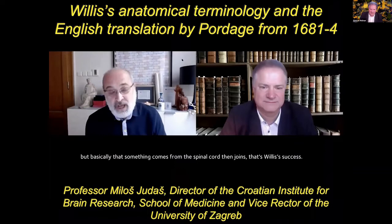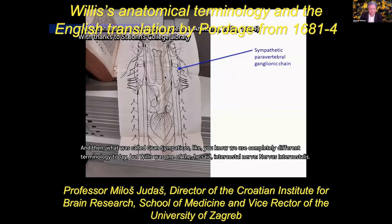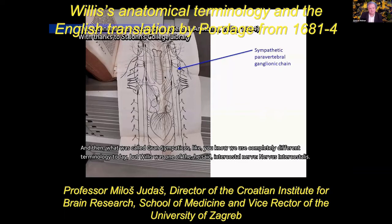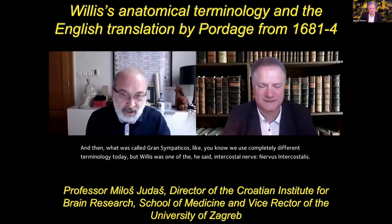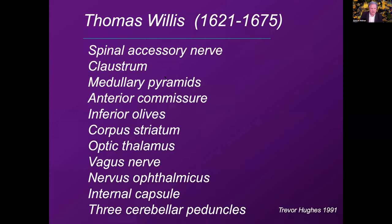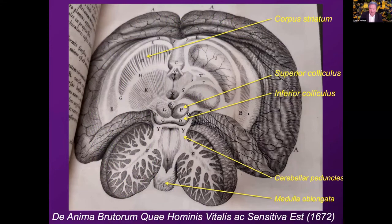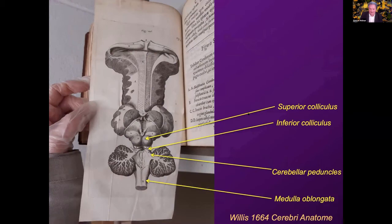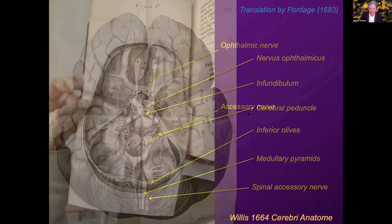Willis published everything in Latin, and the English nomenclature actually hindered progress because the English nomenclature was never really accepted. What was called the grand sympathicus — we use completely different terminology today. Willis called it 'nervous intercostalis,' the intercostal nerve, but it is not the same as today's intercostal nerves — it was a large sympathetic plan. Some of this nomenclature we still use today, and I just made a list of these terms coming from Willis. When I teach anatomy to second-year students and they ask about the origin of these terms, I usually refer them to Willis. His contribution was enormous.